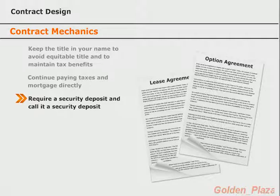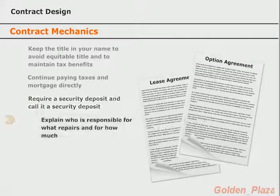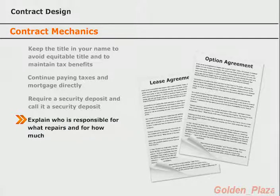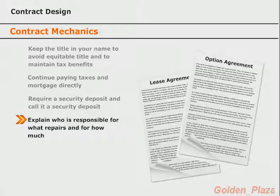Speaking of repairs, it is a good idea to include in your lease agreement information about who is responsible for what repairs during the lease. Don't just assume the tenant buyer will fix anything that comes up, especially if they are stuck thinking they are just renters. Specifically state that they are responsible for repairs that cost under a certain amount, and that if repairs are more expensive than that amount, you will take care of them. Generally, setting a $500 limit is a good choice since that places all the small daily repairs under the tenant buyer's responsibility and lets you get away from being a traditional landlord.